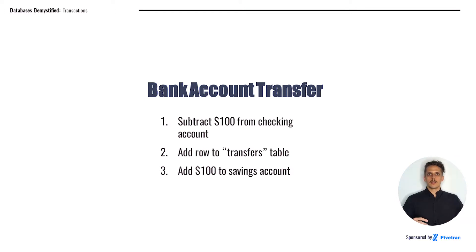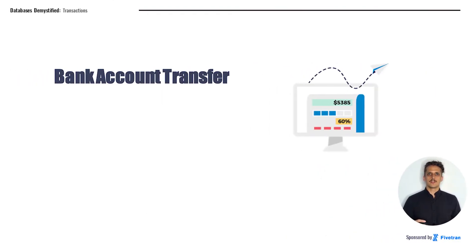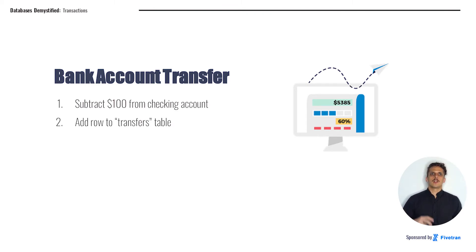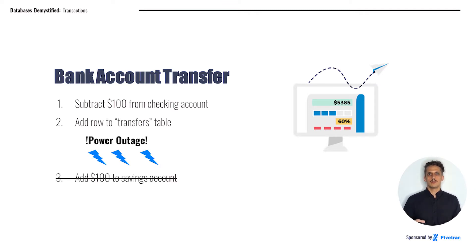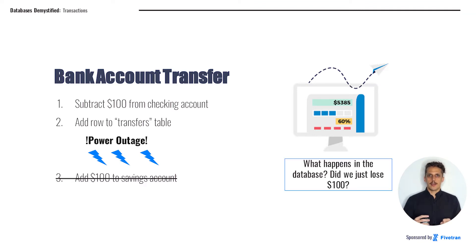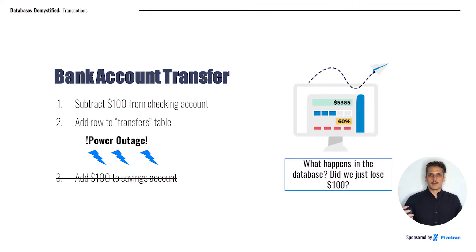If we take $100 from the checking account, then we can move it to the savings account. So now we're going to imagine what happens if something goes wrong. When we try to run this operation, we complete step one, subtracting $100. Then we complete step two, adding a row to the transfers table. Then the power goes out and our whole system goes down. The question you should be asking yourself is: what happened to that $100? Did we just subtract $100 from the checking account and lose it?